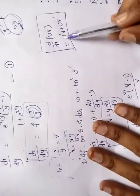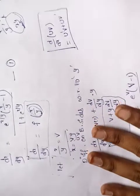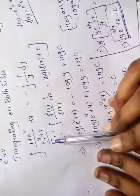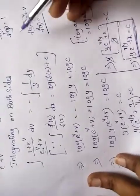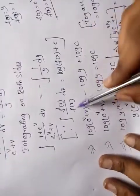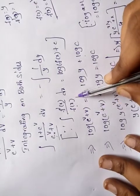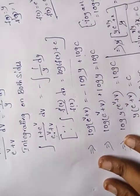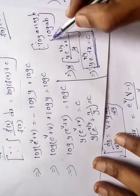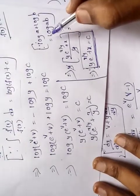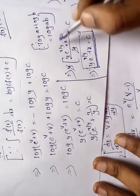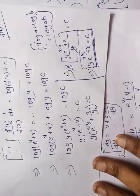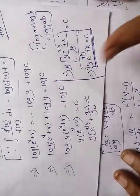Three key formulas were used: first, the product rule d/dx(uv) = u'v + uv'; second, the integration formula ∫f'(x)/f(x)dx = log|f(x)| + c; third, the logarithm law log a + log b = log(ab).